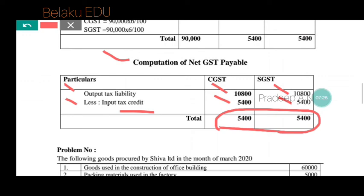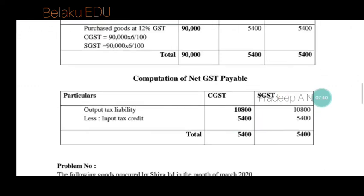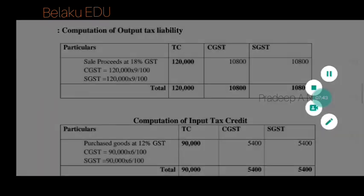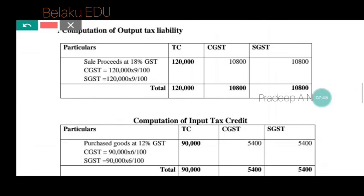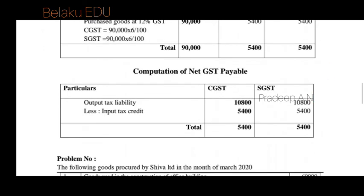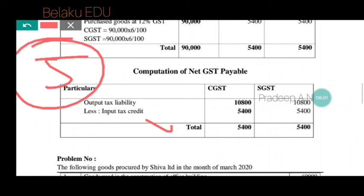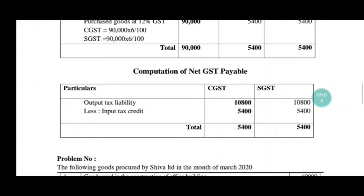So to summarize: first find output tax, then find input tax credit, then subtract input tax credit from output tax to get the net GST payable. The net GST payable is 5,400 each for CGST and SGST. This is a 5 marks question. Thanks for watching my videos — please like, share, and subscribe. Thank you.